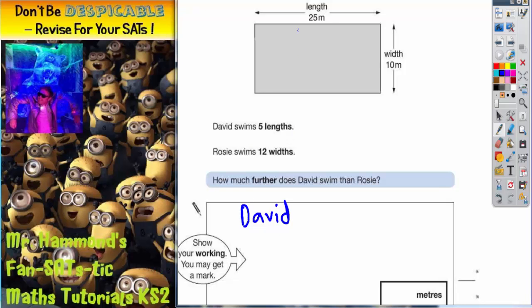He swims 5 lengths. Now each length is 25 metres, so he's going to do that 5 times.